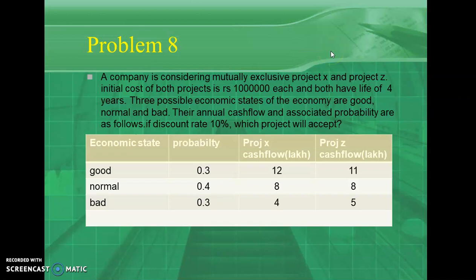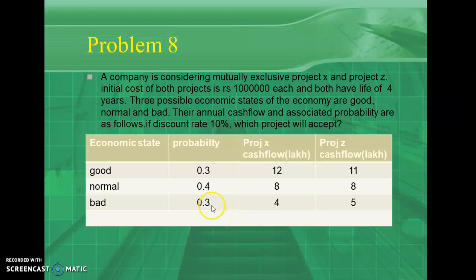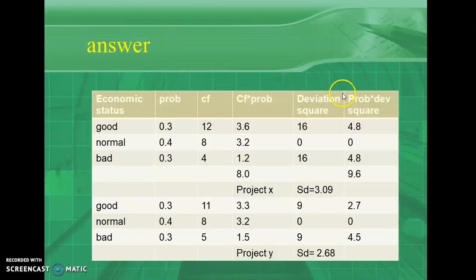The last problem is Problem H. A company is considering mutually exclusive projects X and Z. The initial cost of both projects is 10 lakh rupees and both have a life of 4 years. Three economic states are given: good, normal, and bad, with probabilities 0.3, 0.4, and 0.3 respectively. Cash inflows for both projects are given. Multiply cash flow by probability: 0.3 × 12 = 3.6; 0.4 × 8 = 3.2; 0.3 × 4 = 1.2.